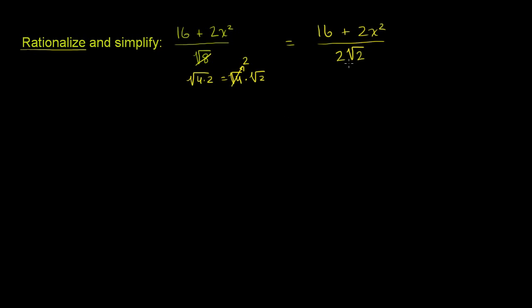I've simplified a little bit — no rationalizing just yet. And it looks like there's a bit more simplification I can do first, because everything in the numerator and denominator is divisible by 2. So let's divide the numerator by 2 — or you could view it as multiplying numerator and denominator by one half. So 16 times one half is 8, 2x squared times one half is just x squared, and 2 times the principal square root of 2 times one half is just the square root of 2. So this whole thing has simplified to 8 plus x squared, all of that over the square root of 2.